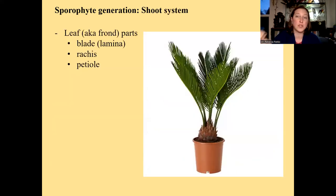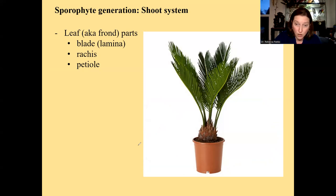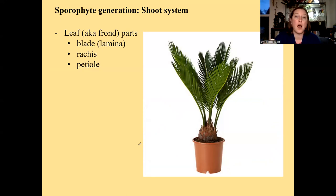We're going to talk about parts of the sporophyte generation of cycads, using terminology that's familiar from the fern lab. This cycad — what kind of habit does it have? It has a short, round trunk, so this is a bulbous habit cycad. Emerging from the trunk, you see leaves. The leaves have a blade or lamina — the same thing — which is the main green part of the leaf.